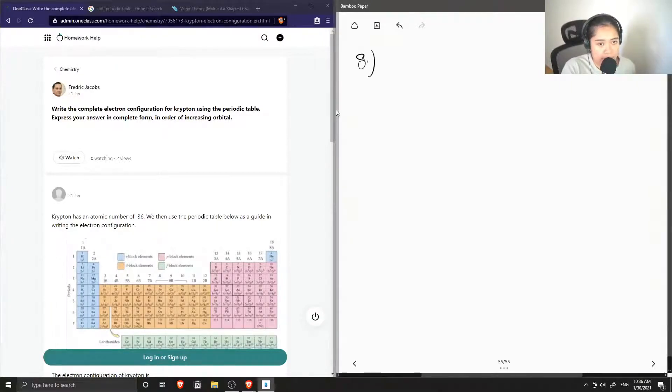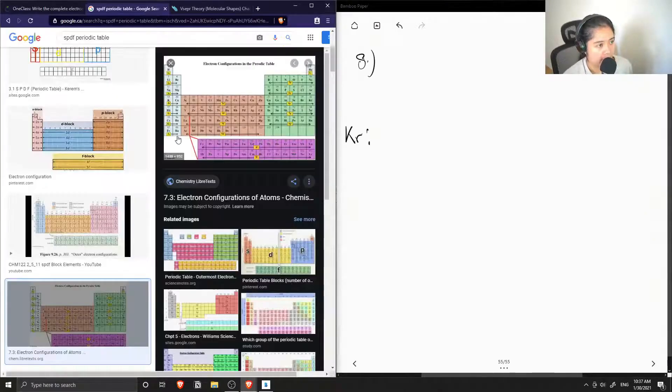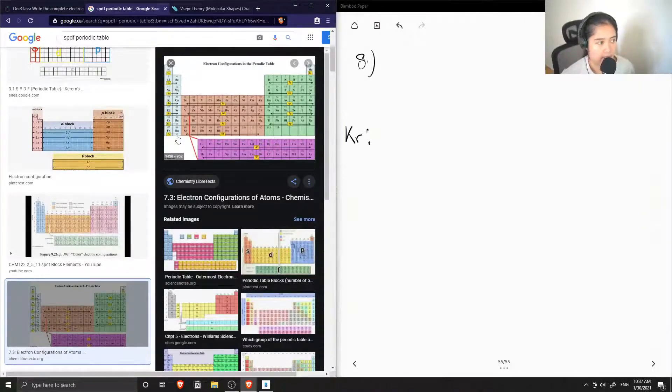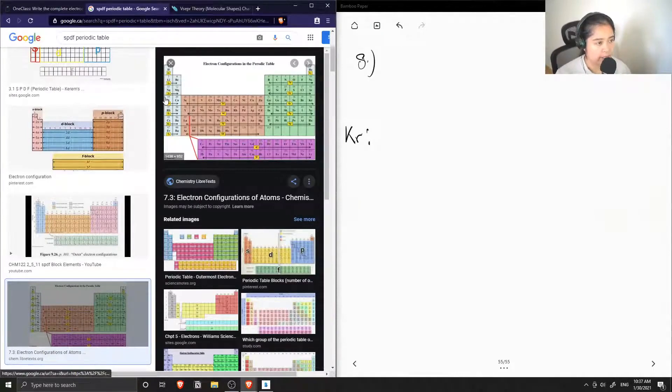So again we need to write an electron configuration and the first step is to divide our periodic table into the different sections. So we have the S block which are the first two columns here, the P block is shown in green,